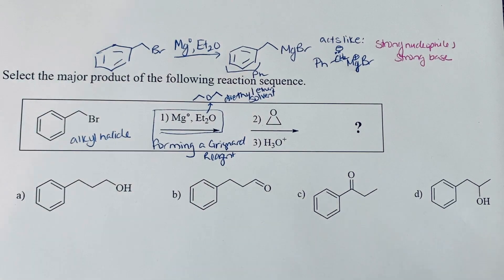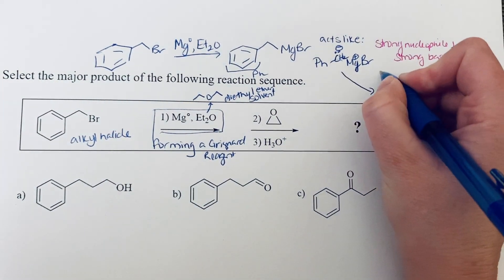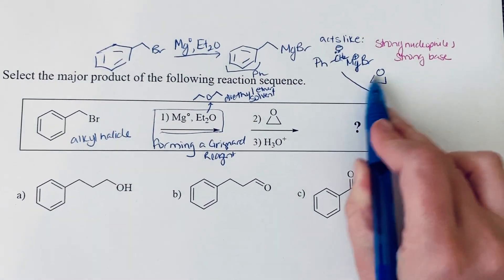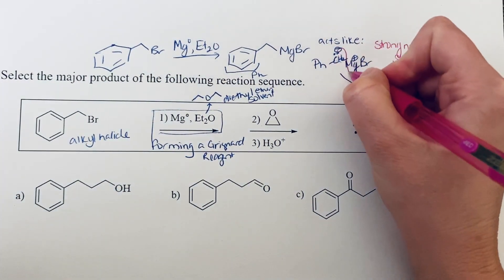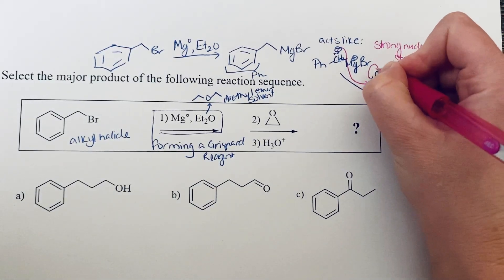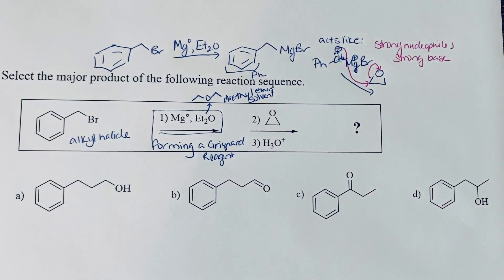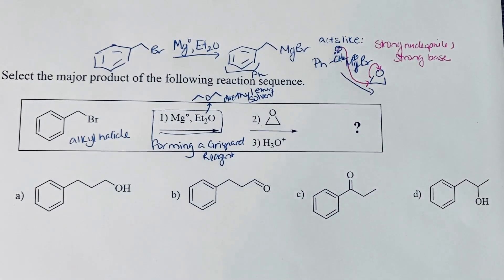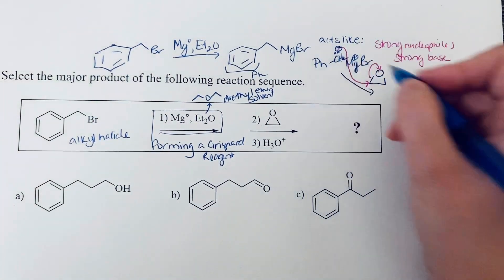So once we have formed this Grignard reagent, the way it could react with this epoxide is it's going to attack one of the two carbon atoms of the epoxide and break the carbon oxygen bond. And so this is a symmetrical epoxide. We didn't have to think about what side we were attacking. So when we follow these arrows.